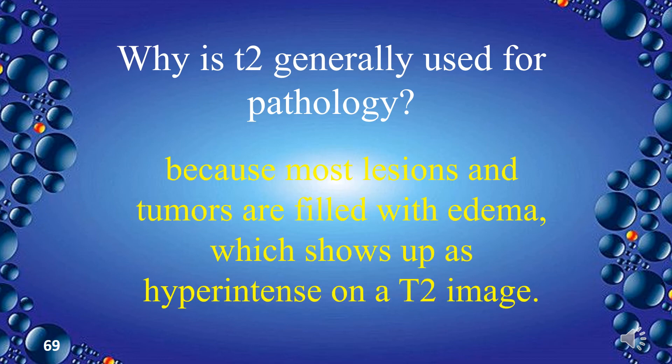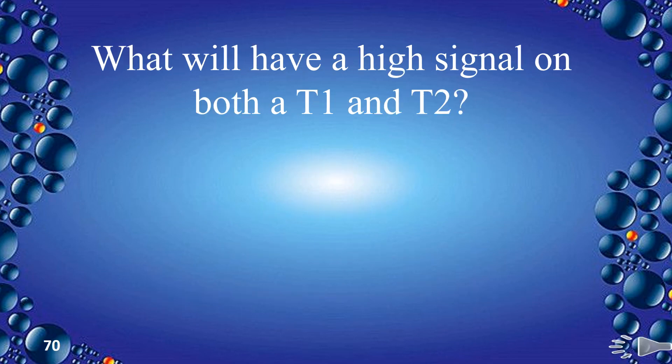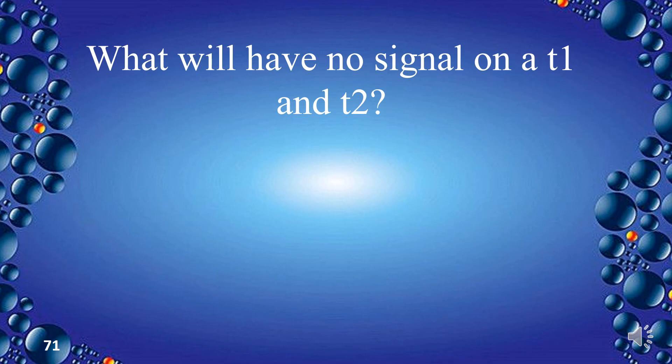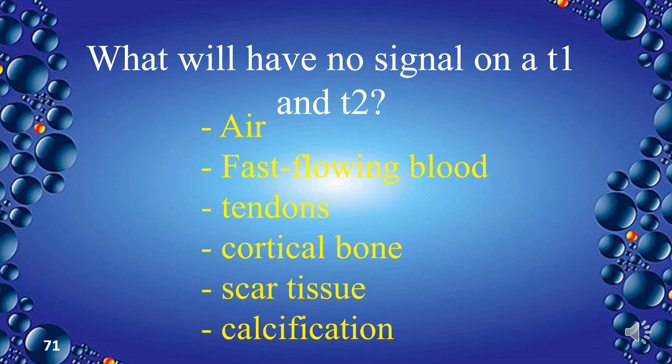Why is T2 generally used for pathology? Because most lesions and tumors are filled with edema, which shows up as hyperintense on a T2 image. What will have high signal on both T1 and T2? Slow-moving blood and hemangioma. What will have no signal on T1 and T2? Air, fast-flowing blood, tendons, cortical bone, scar tissues, and calcification.